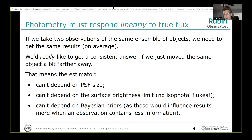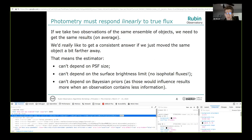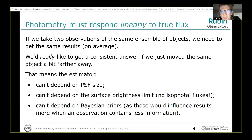If you want your photometry estimator to be linear, it can't depend on PSF size, because PSF size depends on observing conditions. It can't depend on the surface brightness limit, meaning you can't be doing isophotal flux. And it can't depend on Bayesian priors, because Bayesian priors influence the posterior more when observations contain less information. I'm not saying you can't use Bayesian statistics, but what we report in catalogs as photometry must be likelihood-based, not posterior-based. Bayesian statistics needs to happen at a higher level.